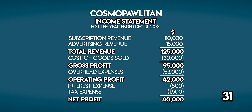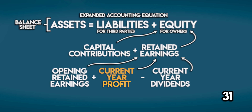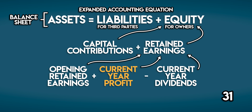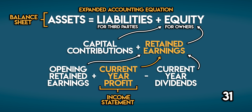The 31st thing you should know is the link between the income statement and the balance sheet. Current year profit slots in on the bottom line of the expanded accounting equation, meaning the income statement and balance sheet are inherently linked — current year profit rolls up into retained earnings, which makes up part of equity, the owner's claim on the net assets of the business.